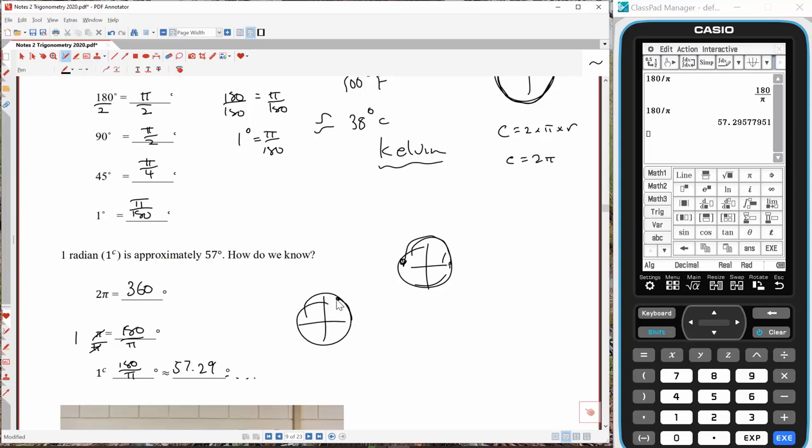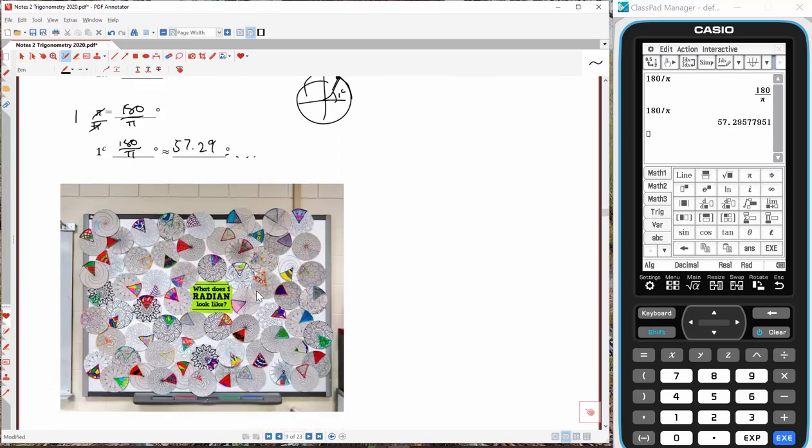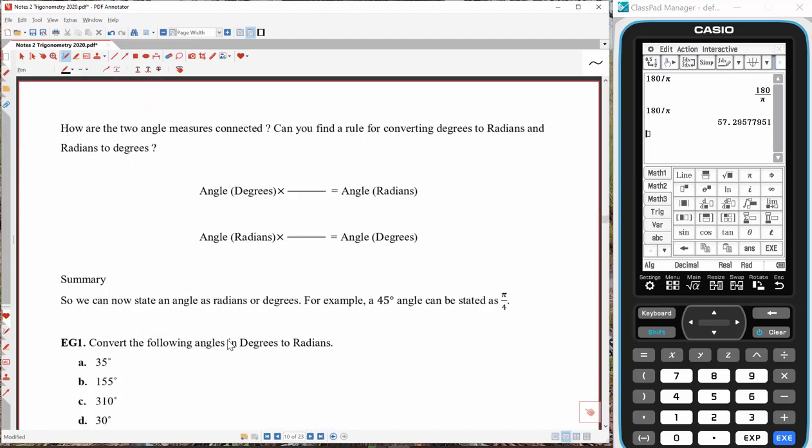So we go up to roughly there. That angle there, 1 radian, 57 degrees roughly. Cool activity by someone over in the States who I follow on Twitter here. Got her students to look at exactly what 1 radian looks like. And here's the different colouring patterns of students doing 1 radian. So, each of these little pieces here represents an angle of 1 radian or 57 degrees.